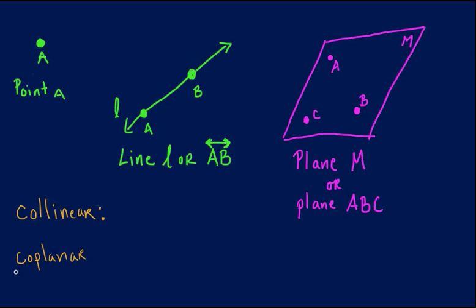Collinear and coplanar. So let's say that again. We have collinear, and we also have coplanar. What this means right here is that when something is collinear, that means that you have points that are going to be on the same line.